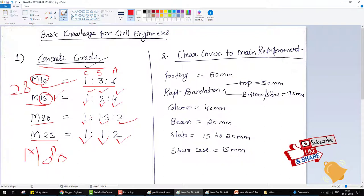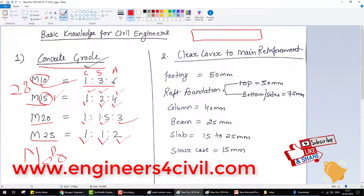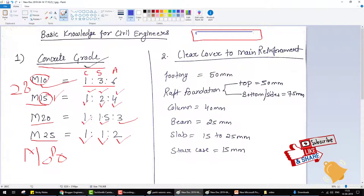The first question: what is clear cover and what is main reinforcement? If you see a beam, the longitudinal bars that resist bending moment are called main reinforcement. The clear cover is from the steel outer edge to concrete outer edge. This is the clear cover.